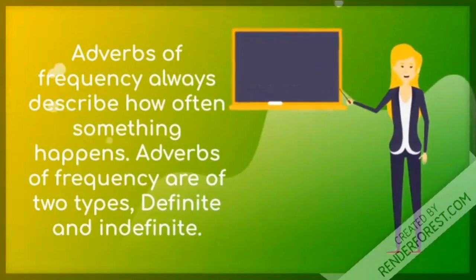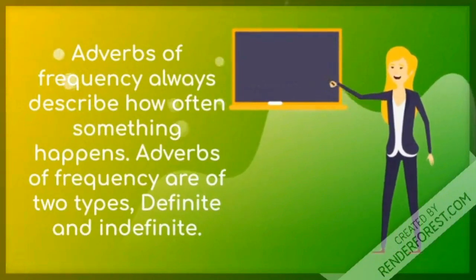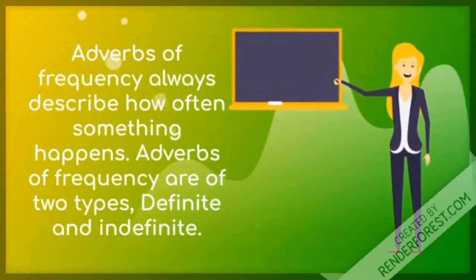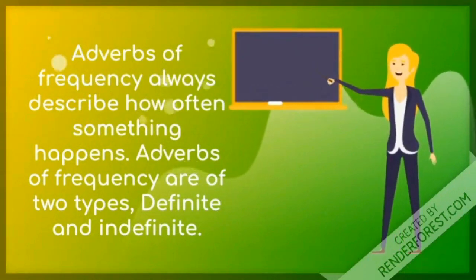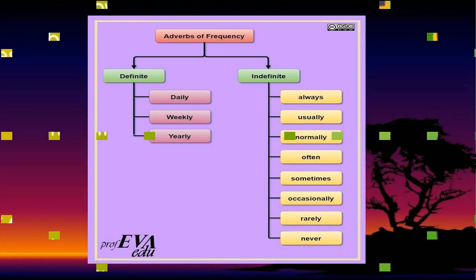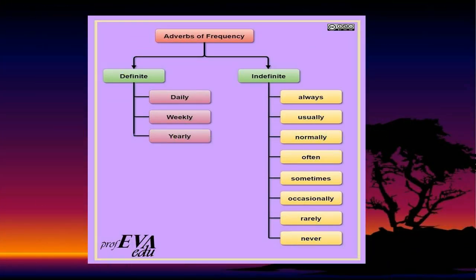Adverbs of frequency always describe how often something happens. Adverbs of frequency are of two types: definite and indefinite. Definite adverbs of frequency include daily, weekly, or yearly. An indefinite adverb of frequency doesn't say an exact time frame — examples include always, usually, normally, often, sometimes, occasionally, rarely, and never.